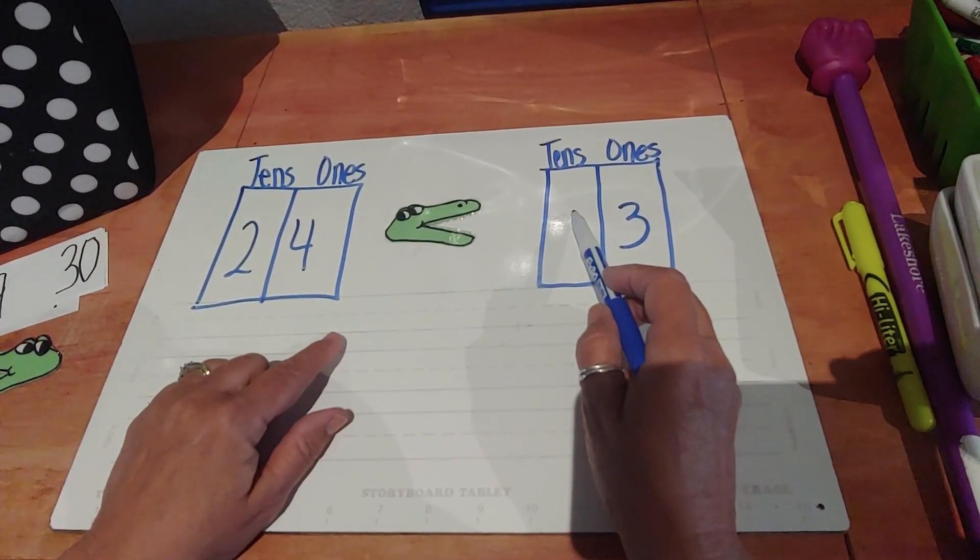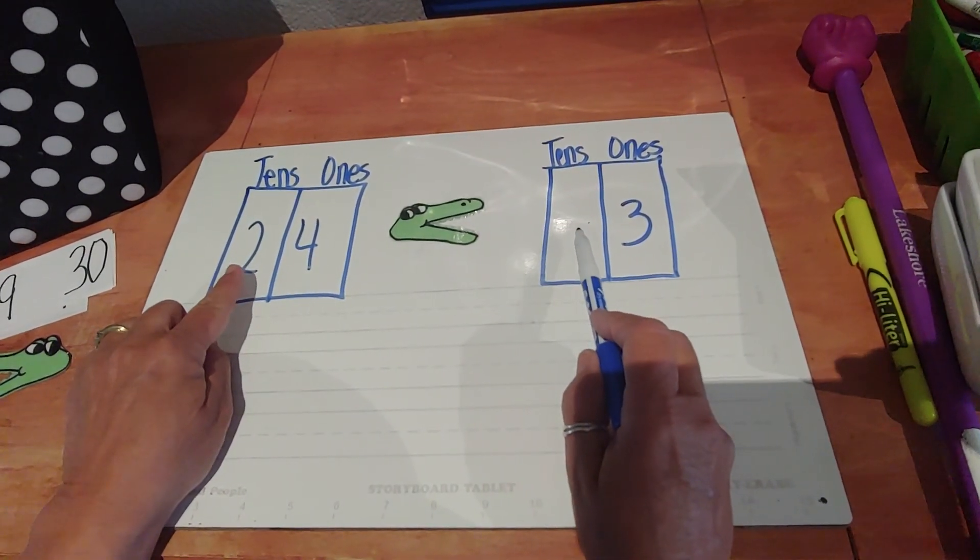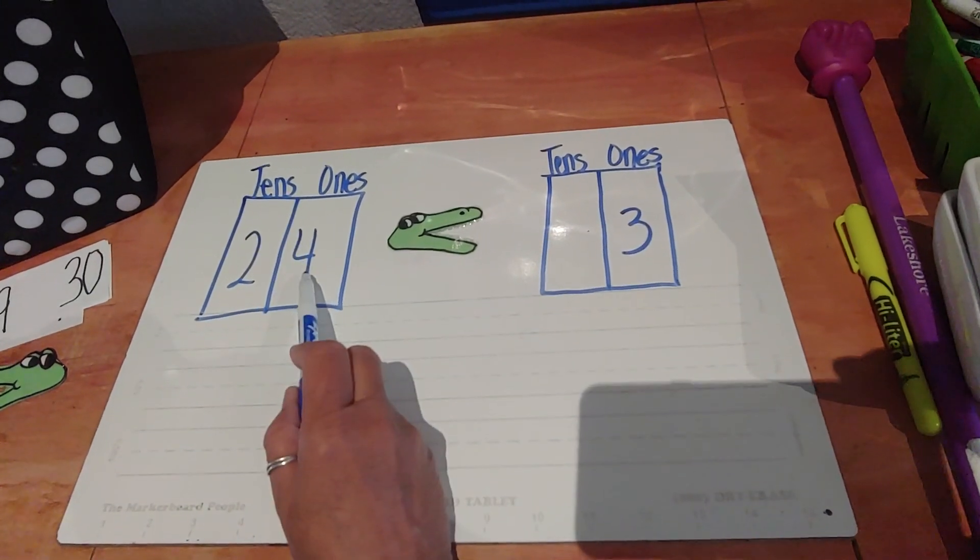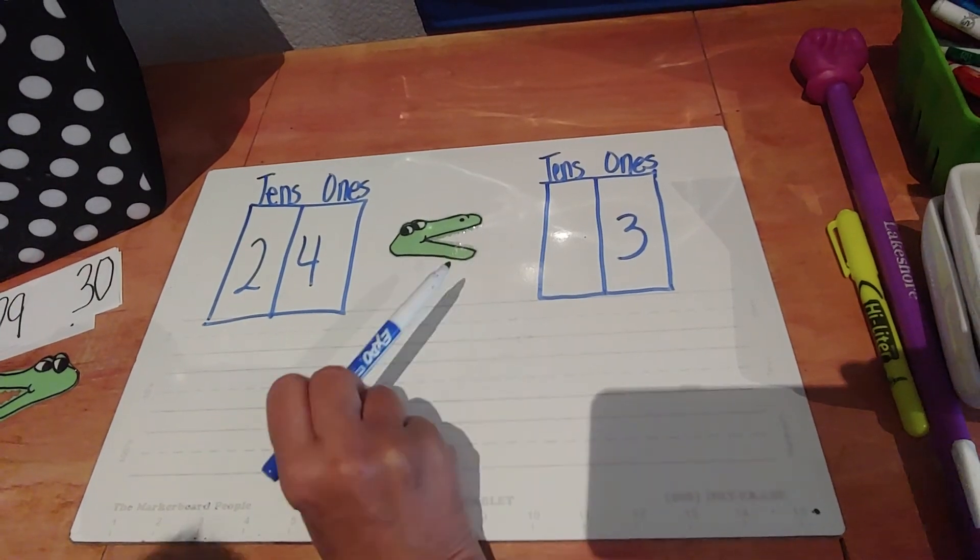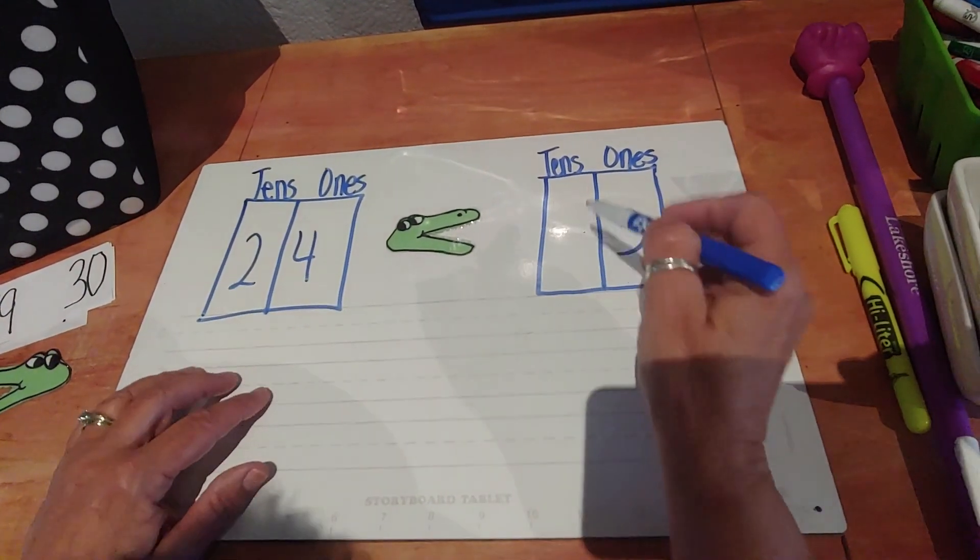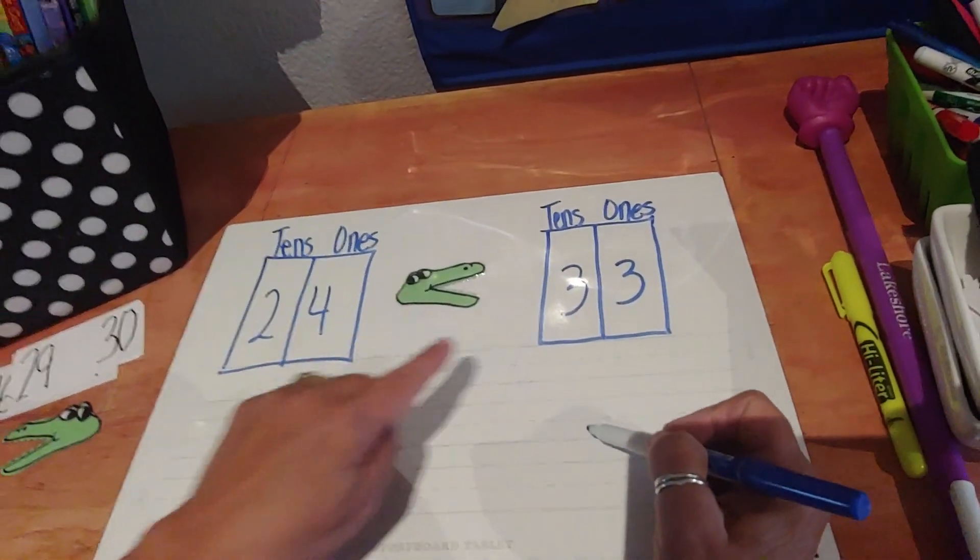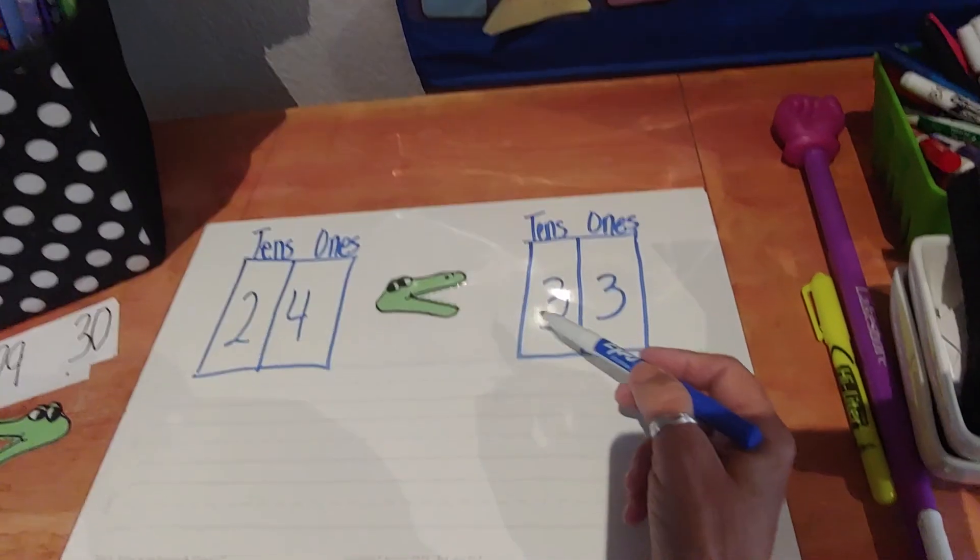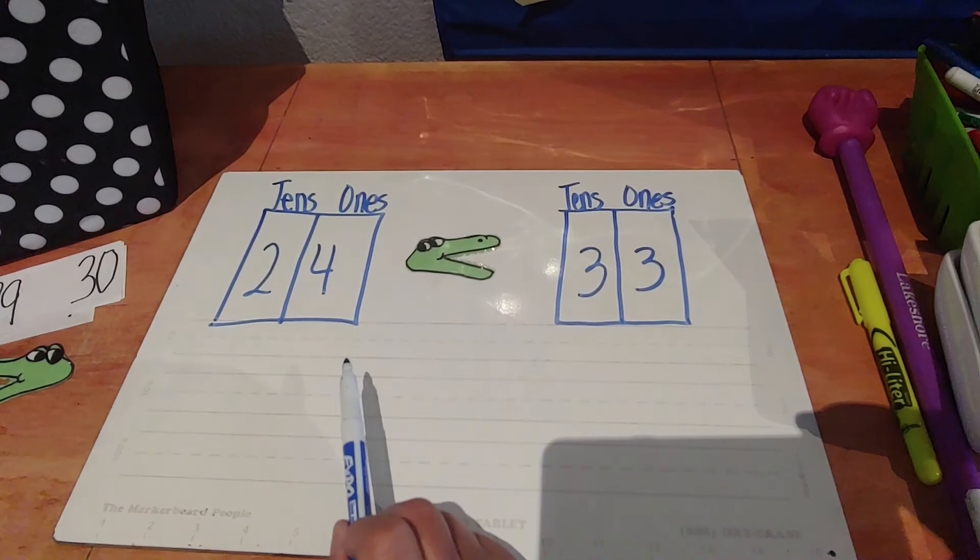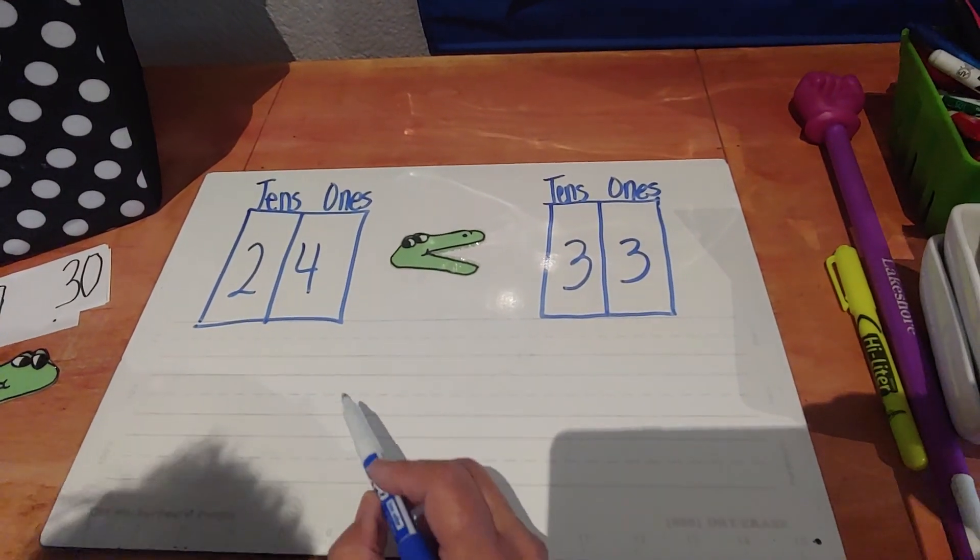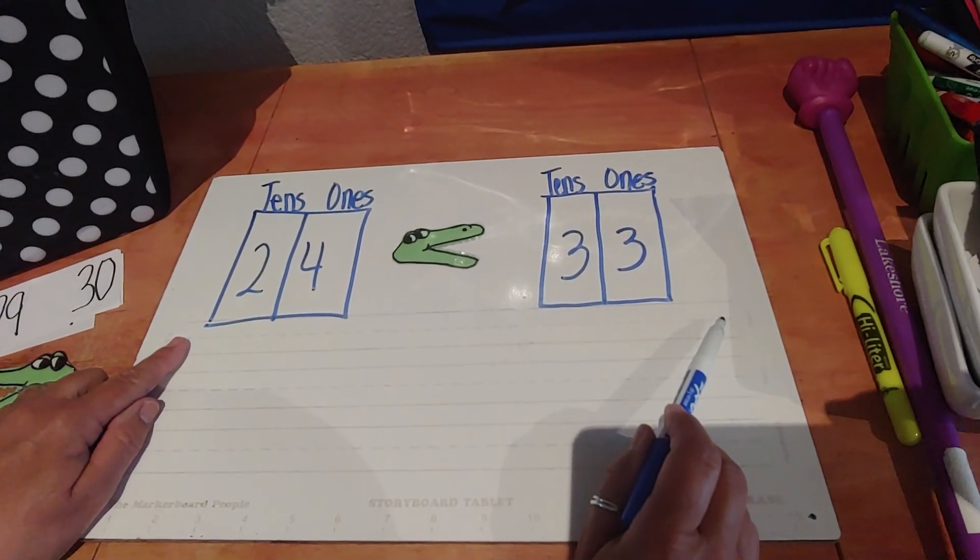So if we put a two, it still wouldn't work because even though we would have two tens in each number, we only have three ones. And over here we have four ones. This number has to be greater than because the big mouth is facing that way. So we could put a three because three tens are more than two. We could put a four or a five or a six, anything bigger than a two will make this sentence true. And they want us to practice writing our number sentences. And we always start on this side reading that way, just like your name.